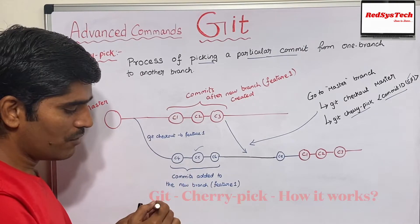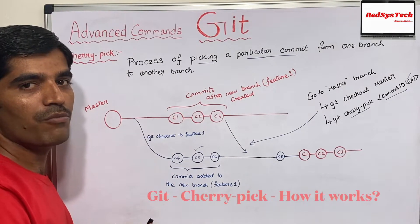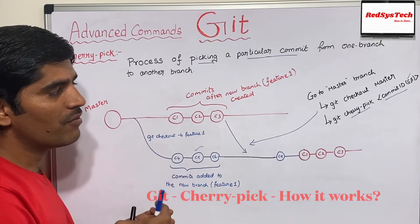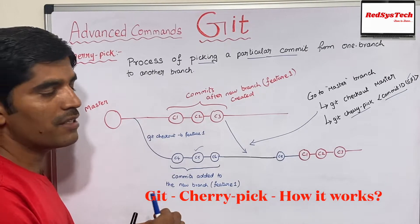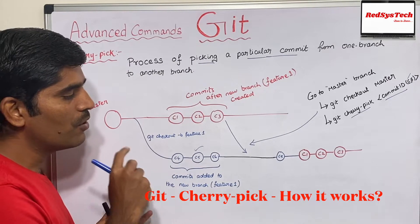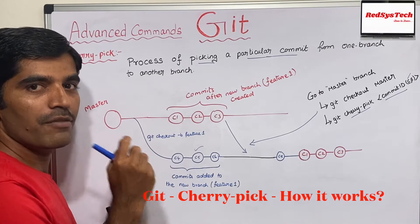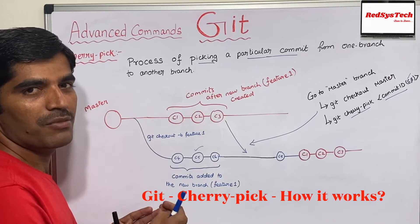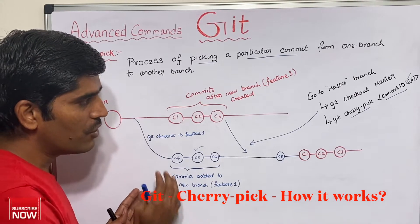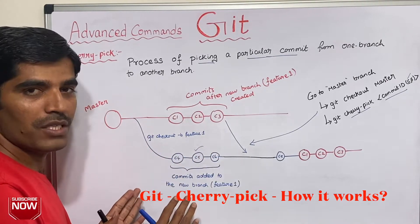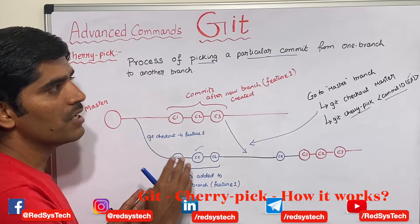This is basically useful when we do any real-time project and have some production issue where we want to fix something quickly — a hot fix. That is where we have to quickly take the particular fix and apply it in production or any other non-production environments like pre-production or something like that. So in that case, we will use cherry pick. It's very rarely used, but at the same time, we have to understand how cherry pick works.